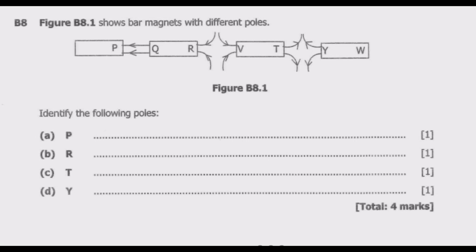Figure B8.1 shows bar magnets with different poles. Identify the following poles. We have P, R, T, Y and each one is one mark.